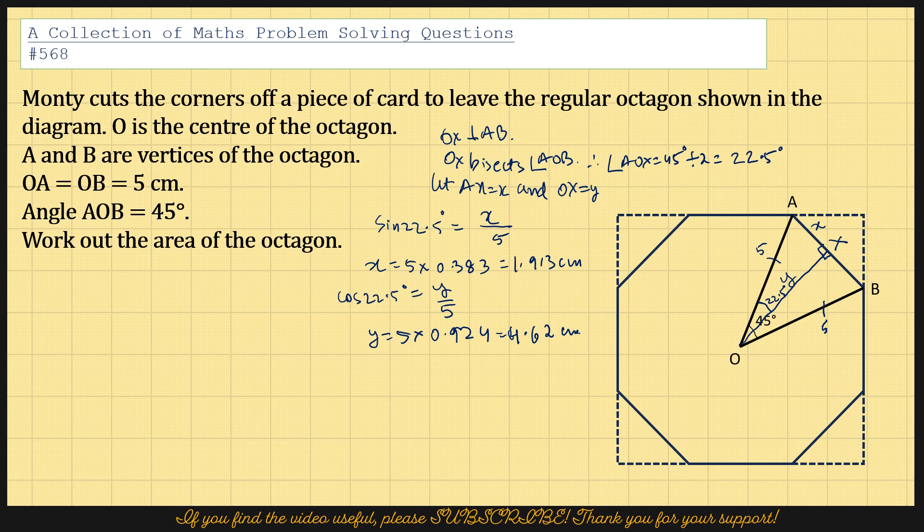So I have x, I have y. So I'm going to calculate the base. Therefore AB equals 2 times 1.913. So 2 times 1.913 and that equals 3.83. So if I have 3.83, that's AB. And OX is y, and that is 4.62, and that is OX.